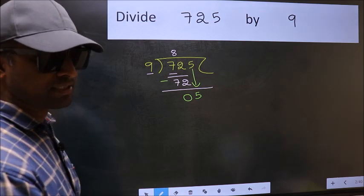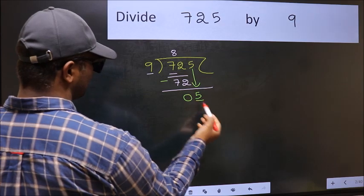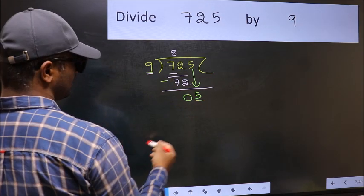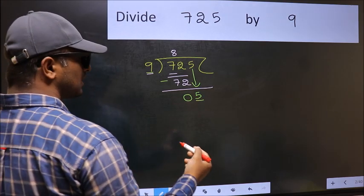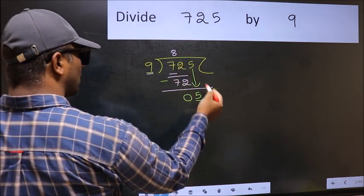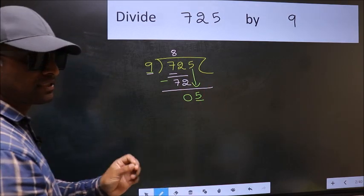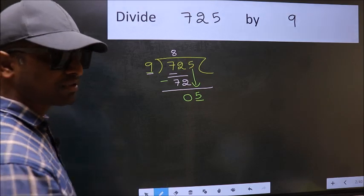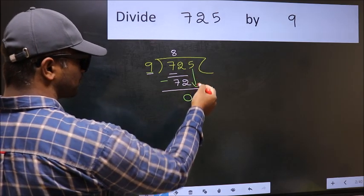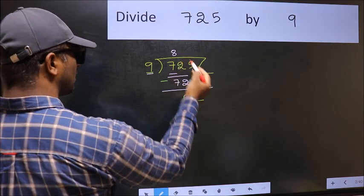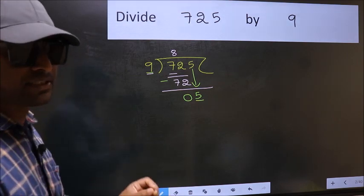After this step, the mistake happens. And the mistake is this: here we have 5 and here 9. 5 is smaller than 9. So what many do is they directly put dot and take 0, which is wrong. Why is it wrong? Because just now you brought this number down, and in the same step you want to put dot and take 0, which is wrong.